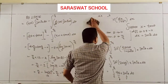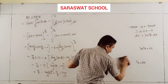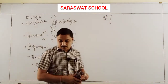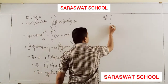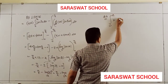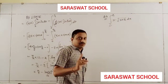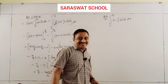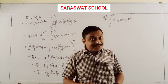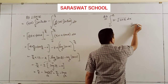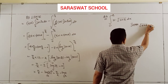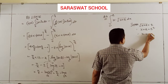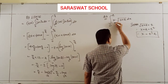Fourth one: integrate from 0 to 2, x times √(x+2) dx. Today's examples involve root functions, so as usual for root-related solutions, suppose √(x+2) equals t. So x+2 equals t², meaning x equals t²-2. I apply this substitution.